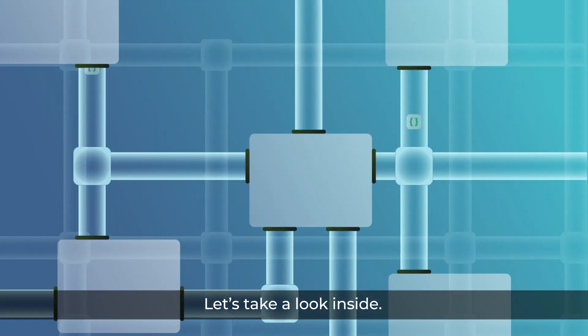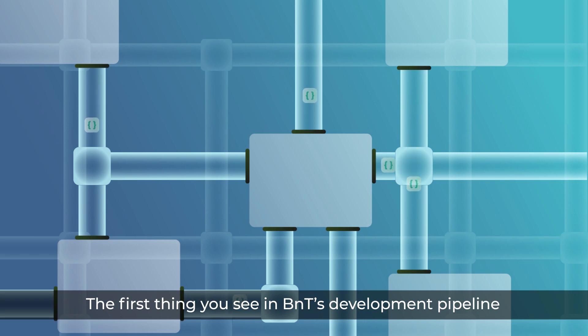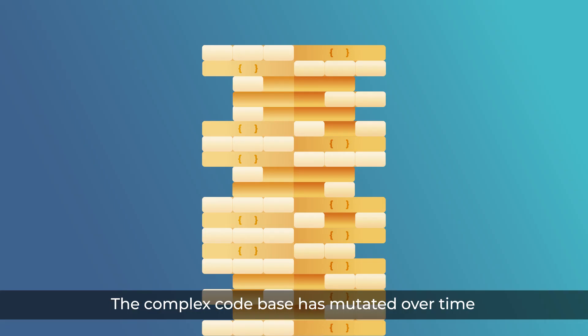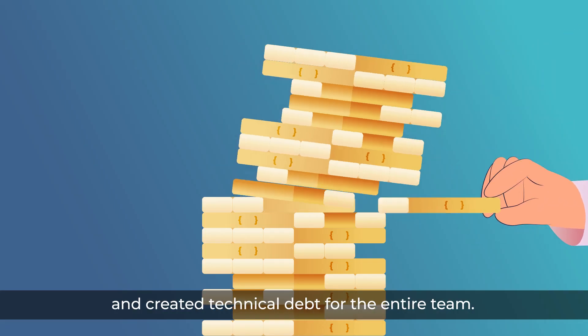Let's take a look inside. The first thing you see in B&T's development pipeline is a lack of API test suites. The complex code base has mutated over time and created technical debt for the entire team.